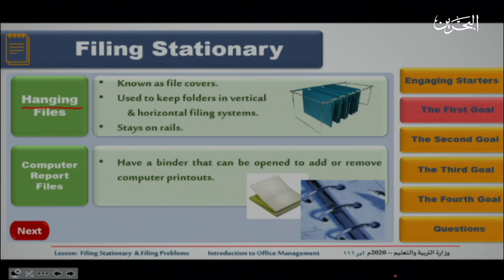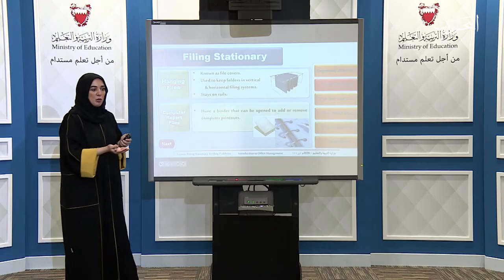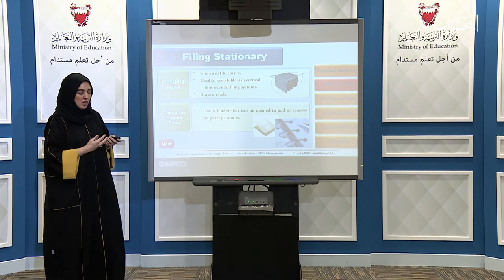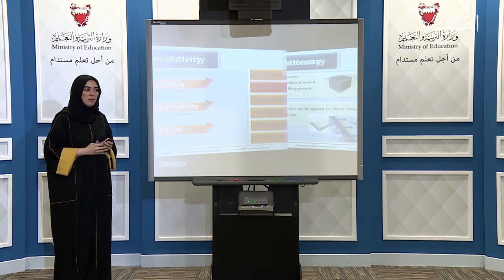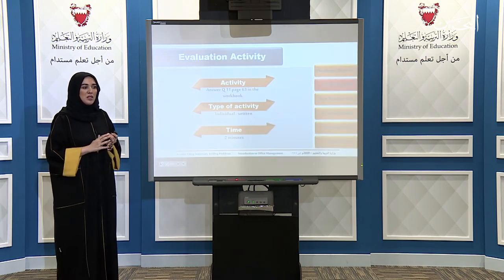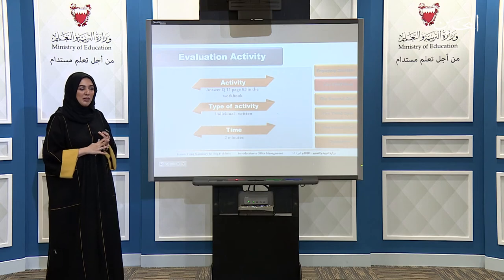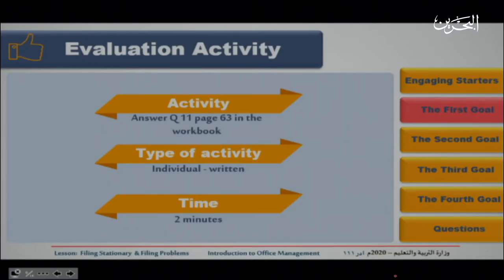The next type is computer report files. This kind of file has a binder that can be opened to add or remove computer printouts. You can open it and add or remove papers as needed. You can answer question 11, page 63 in the workbook.